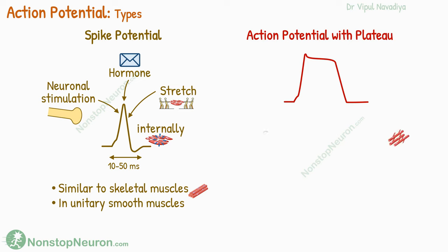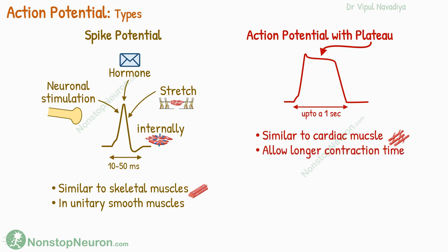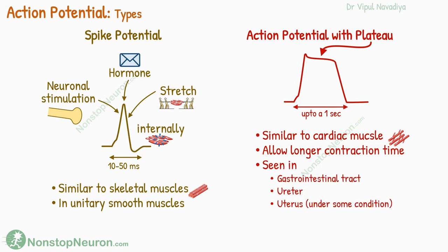The next type of action potential, the one with plateau, is similar to action potential in cardiac muscles. In this, we have a prolonged depolarized state before repolarization, called a plateau. The duration of such action potential can be from hundreds of milliseconds to a second. This long plateau allows prolonged contraction of the muscle. It's seen in the gastrointestinal tract, ureter, uterus under some conditions, and certain vascular smooth muscle cells.